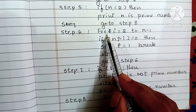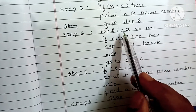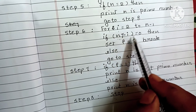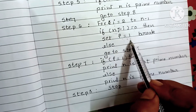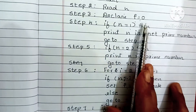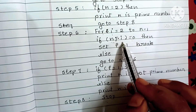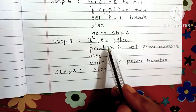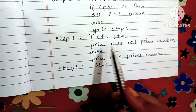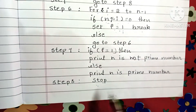Step 6 — for loop: for I equal to 2 to N minus 1. If N mod I equals 0, set F equal to 1 and break the loop; else go to step 6. Step 7 — if F equals 1, print N is not a prime number; else print N is a prime number. Step 8 — stop.